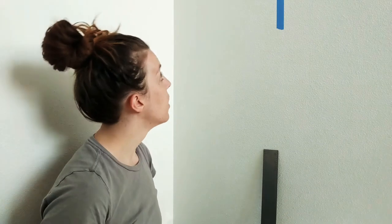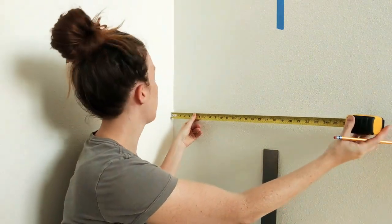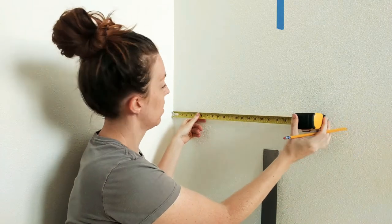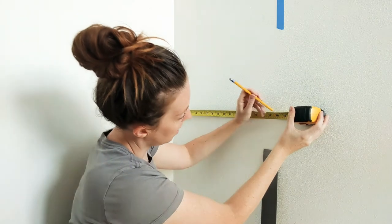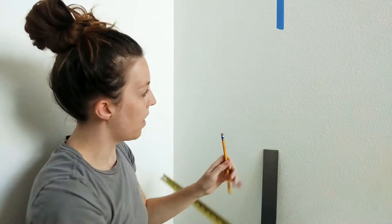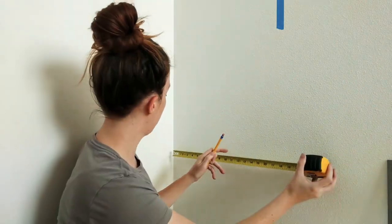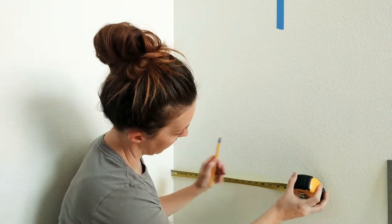The first thing you want to do is measure from the wall where you want to put your line. I am going to do a vertical line, and I want my line to be 18 inches from the corner. So I'm going to mark a line at 18 inches, and then I am going to go down a little bit further and mark another line at 18 inches.